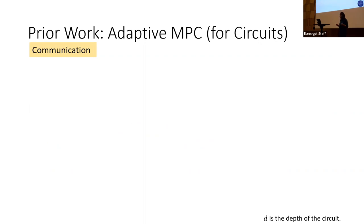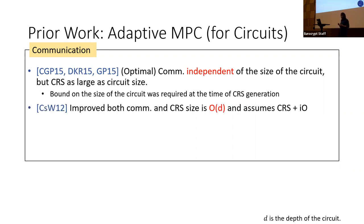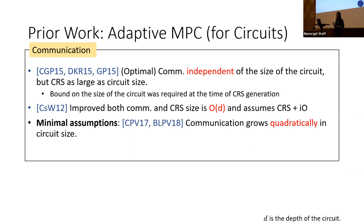The precise round complexity was later shown to be just two rounds by Ben-Hamoud et al. Focusing on communication complexity, there are protocols achieving optimal communication independent of circuit size, but they use strong assumptions like a large CRS and IO-based assumptions. Subsequent improvements reduced the CRS size to depend only on circuit depth, but strong assumptions remain.